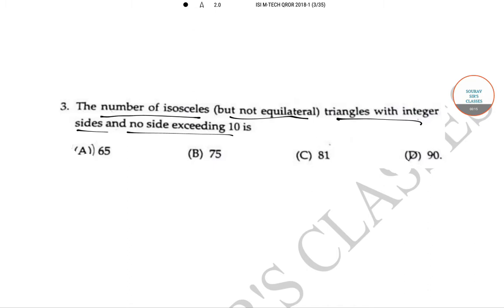Well since we need to calculate the number of isosceles triangles, let the sides be A, A and B. Now, for a triangle to exist, the sum of any two sides should be greater than the third side. So, 2A greater than B or A greater than B by 2.